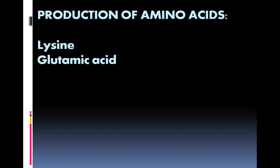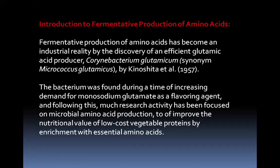In this class we will be discussing lysine production and glutamic acid production. The fermentative production of amino acids has become an industrial reality by the discovery of efficient strains — glutamic acid producers like Corynebacterium glutamicum, which is a synonym for Micrococcus glutamicus, researched and published by Kinoshita et al. in the year 1957.